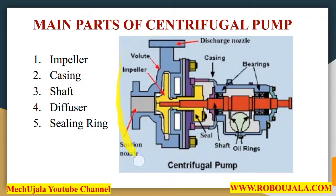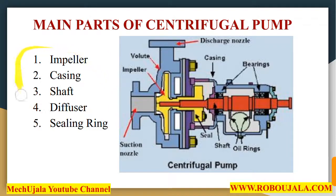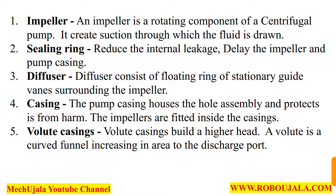Now let's look at the main parts of centrifugal pumps. There are five main parts: impeller, casing, shaft, diffuser, and sealing rings. There are also other parts such as the volute, discharge nozzle, bearings, oil rings, and suction nozzle.